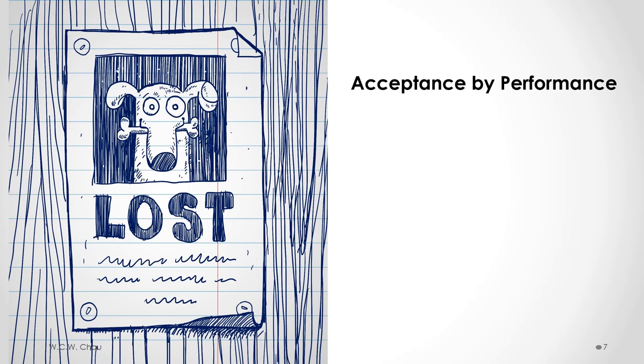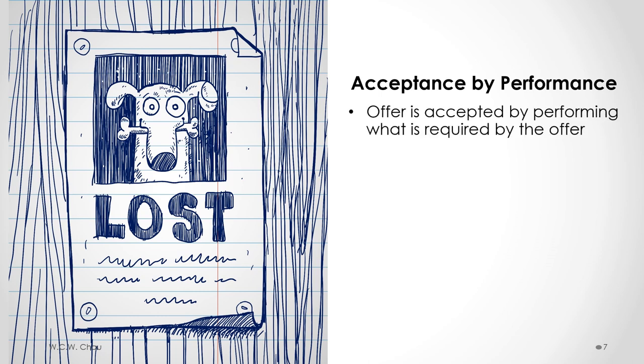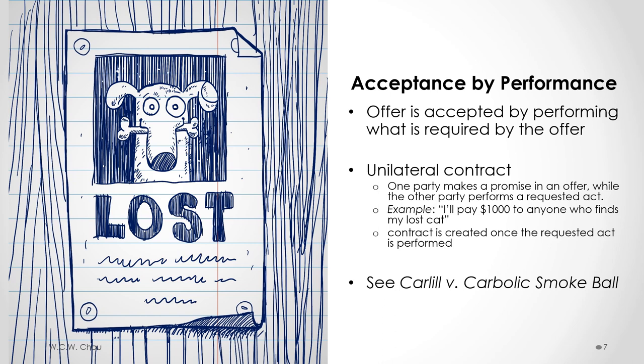Acceptance can also be done by performance instead of by making a promise. This is where the terms of the offer are being performed by the offeree as a way of accepting the offer. This is called a unilateral contract, where one party makes a promise in an offer while the other party — the offeree — performs the requested act set out in the offer. A typical example is a poster saying: 'I'll pay $1,000 to anyone who finds my lost cat.' The contract is created once the requested act is performed — if you find and return the cat, you are accepting that offer by performance.